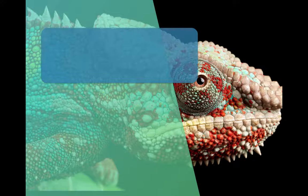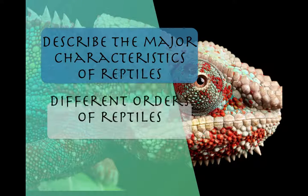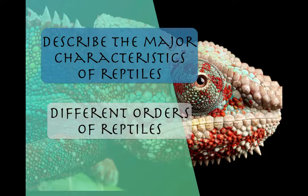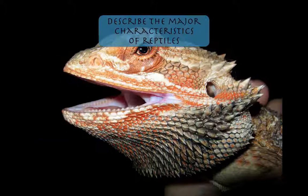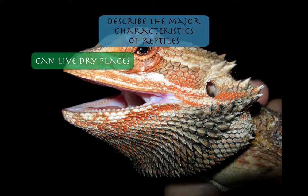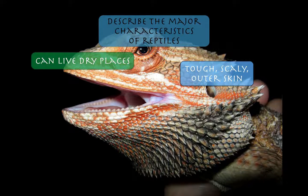We're going to discuss two main ideas in this video. We're going to first describe the major characteristics of reptiles, and then the different orders of reptiles I want you to know. One characteristic is that they live in dry places. Unlike amphibians, they are not dependent on freshwater, damp, swampy areas. They have adaptations that allow them to live in dry, arid places — for example, their tough scaly skin.